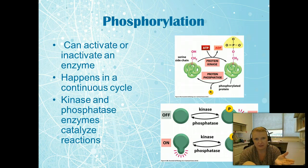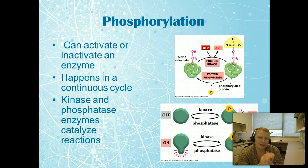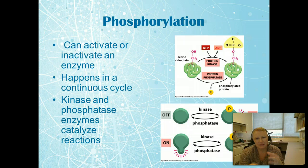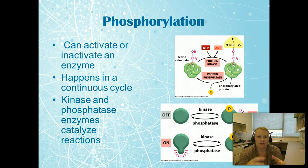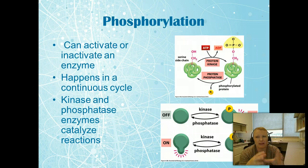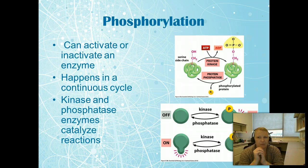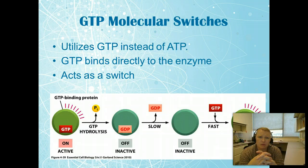Another way to turn enzymes on or off is phosphorylation, where a phosphate group from ATP is added to a protein. Importantly, adding a phosphate group doesn't always turn a protein on — sometimes it turns it off. The enzyme protein kinase adds the phosphate group, while protein phosphatase removes it. The main kinase types are serine, threonine, and tyrosine kinases.